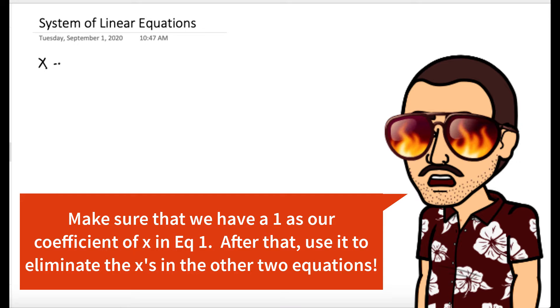So we want to solve the system of linear equations: x minus 3y minus z equals 0, x minus 2y plus z equals 8, and 2x minus 6y plus z equals 6.